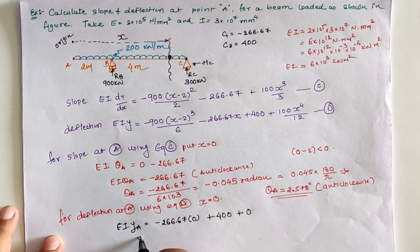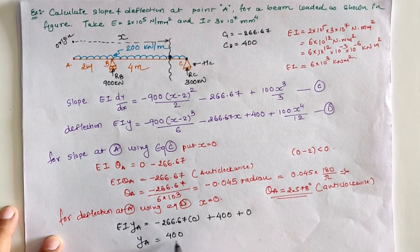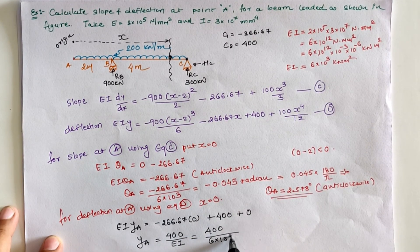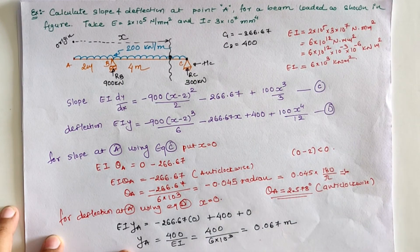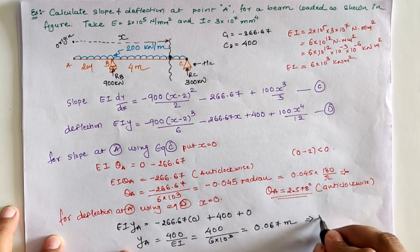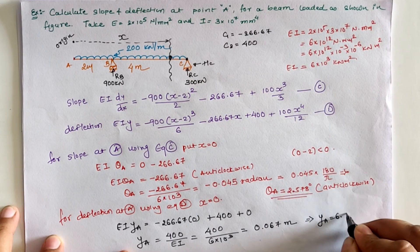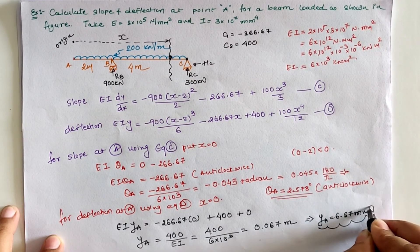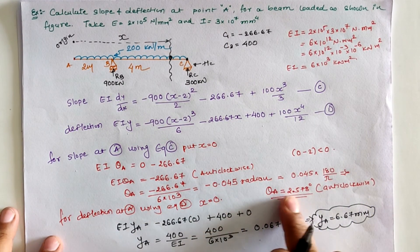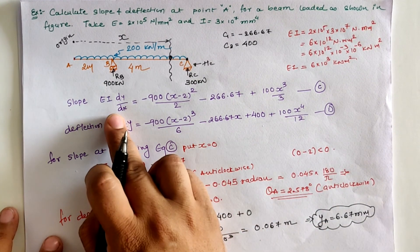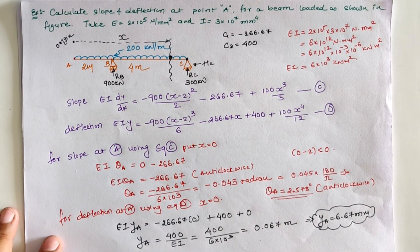For deflection at A, putting x = 0 into the deflection equation, all bracket and power terms vanish, leaving EI·y_A = 400. Therefore y_A = 400 / (6 × 10³) = 0.0667 m = 6.67 mm. Using Macaulay's method we can calculate slope and deflection at any location using the elastic equation relating moment with slope and deflection. Thank you.